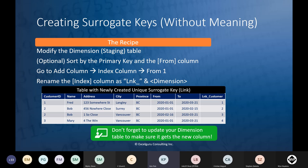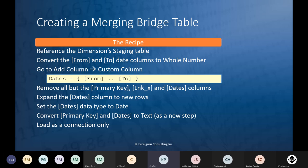Make sure to reload your dimension after adding the surrogate key so the new column appears. For the bridge table: convert 'from' and 'to' columns to Whole Number, add a custom Dates column using list syntax `{ [From] .. [To] }`, then remove all columns except the original primary key, the lnk key, and the Dates list column. Expand Dates to new rows and convert back to Date type. Change customer ID and Dates to Text (Add New Step) before merging.